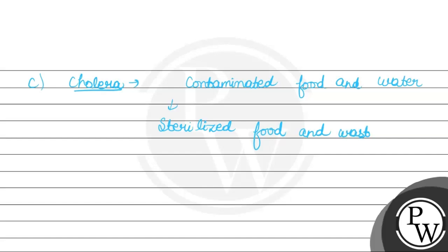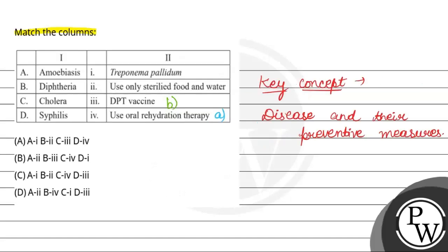This is its prevention. So C Cholera, second, use only sterilized food and water. Option D, Syphilis.